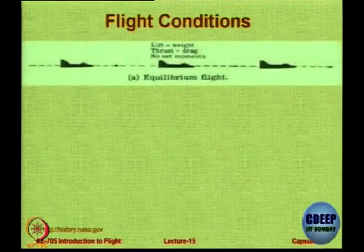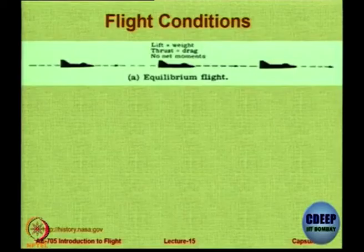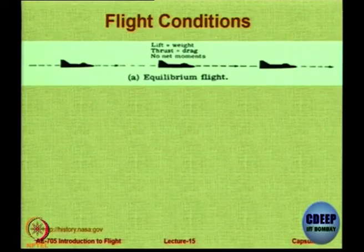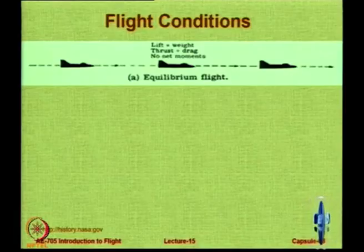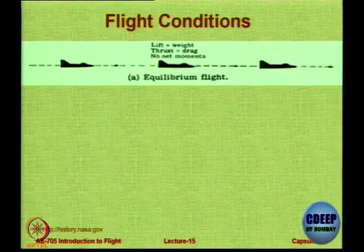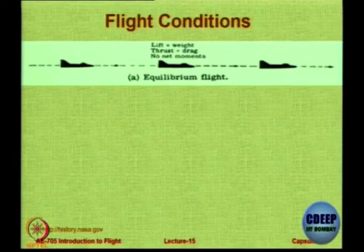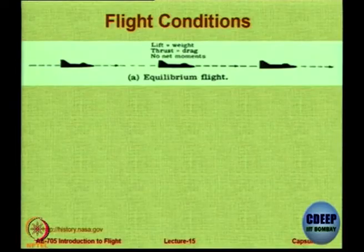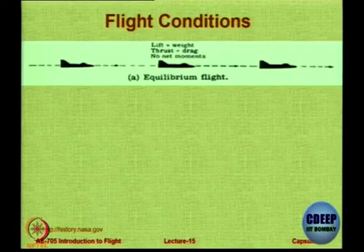These are simple examples, but we are concerned about flight. In equilibrium flight, the aircraft is at some angle of attack — thrust equals drag, and lift equals weight in level flight with no net moment. You could incline it for climbing flight, where it is again in equilibrium with moments in balance, although lift is less than weight in climbing.